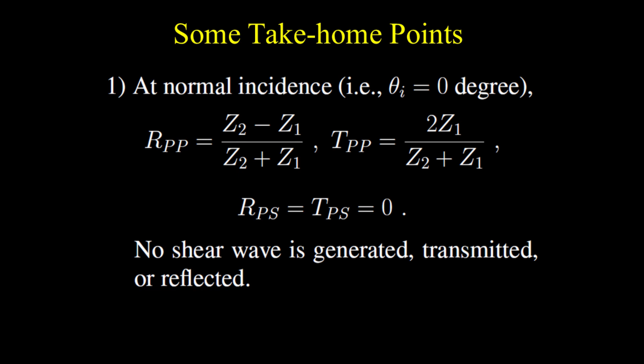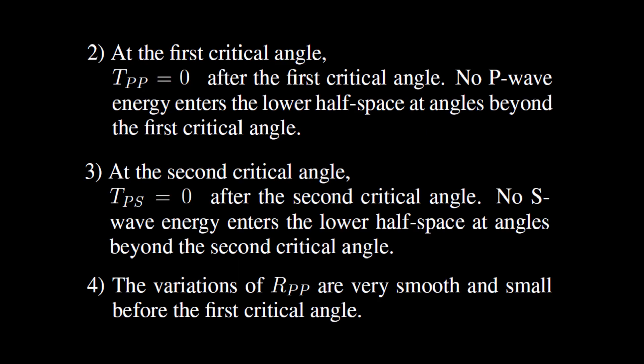Here are some take-home points. At normal incidence (theta I equals 0°), no shear wave is generated, transmitted, or reflected. At the first critical angle, TPP equals zero — no P wave energy enters the lower half space at angles beyond the first critical angle. At the second critical angle, TPS equals zero — no S wave energy enters the lower half space beyond the second critical angle. The variations of RPP are very smooth and small before the first critical angle.